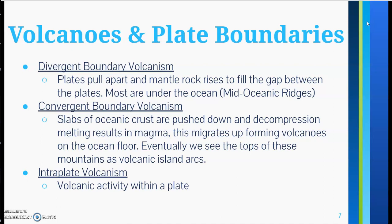Divergent boundary volcanism occurs when plates are pulling apart and mantle rock rises to fill the gap between the plates. Most are underneath the ocean, found along those mid-oceanic ridges.